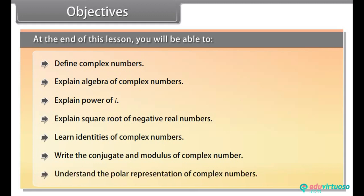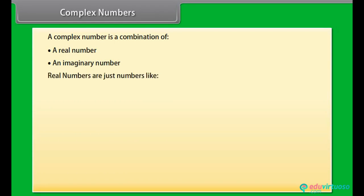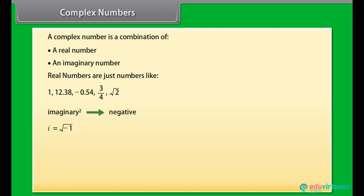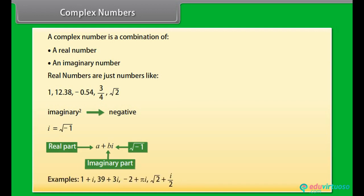Complex numbers: A complex number is a combination of a real number and an imaginary number. Real numbers are just numbers like 1, 12.38, minus 0.54, 3 by 4, square root 2. Imaginary numbers are special because when squared, they give a negative result. The unit imaginary number is iota, which is the square root of minus 1. A plus B iota is a complex number. Examples are: 1 plus iota, 39 plus 3 iota, minus 2 plus pi iota, square root 2 plus iota by 2.